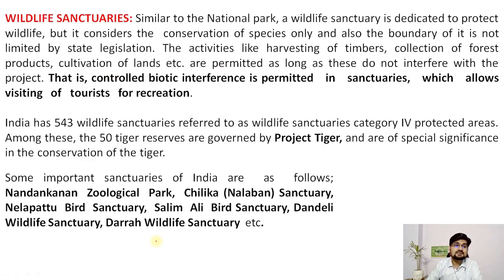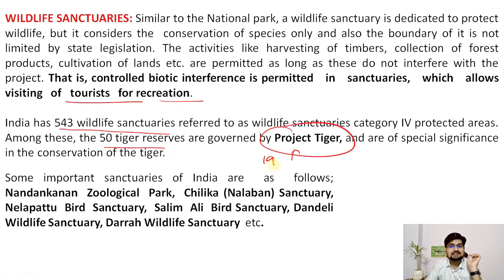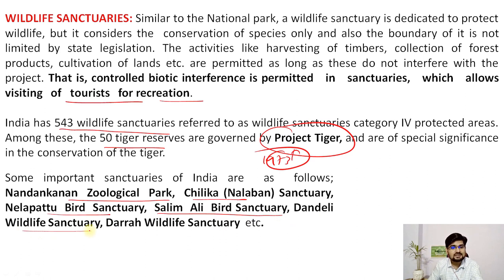India also has wildlife sanctuaries for biodiversity protection, whose main purpose is conservation while also allowing tourism and recreation — an economy plus ecology concept. India has almost 543 wildlife sanctuaries, and 50 are specialized in tigers under Project Tiger, initiated in 1973. Examples include Nandan Kanan Zoological Park, Chilika, Nilapattu, Salimali Bird Sanctuary, and Delhi Wildlife Sanctuary.